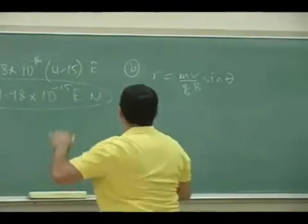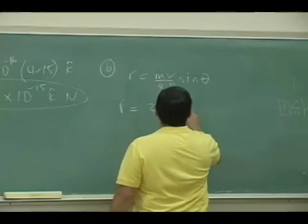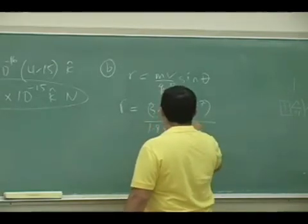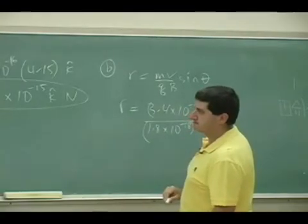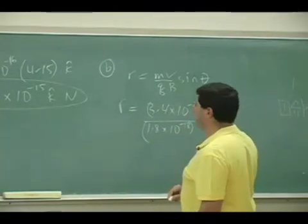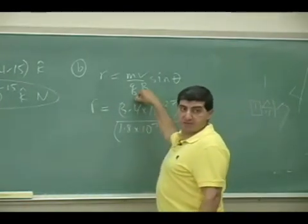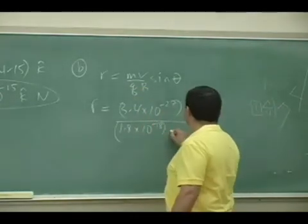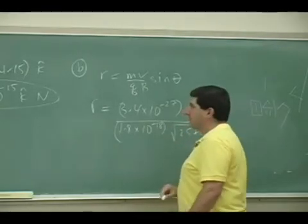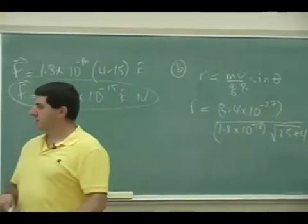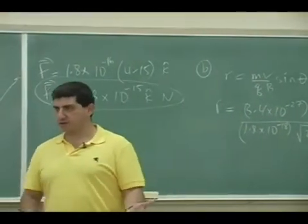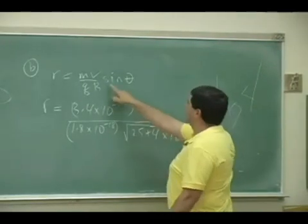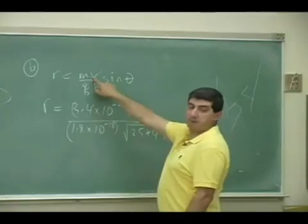So you put the mass here, 3.4 times 10 to the minus 27. The charge is 1.8 times 10 to the minus 18. B, here we're going to have to put the magnitude of the B. So square root of 25 plus 4. The Bx squared plus By squared, so 5 squared plus 2 squared, that's square root of 29, and the power is 10 to the minus 2. And then over here, v sine theta. Now, the v is the magnitude of the v.